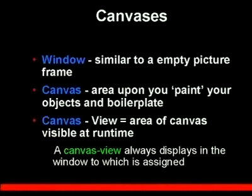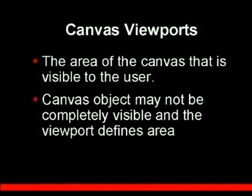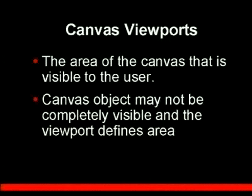Canvas views are always displayed in the window that they're assigned to. Where you have a larger canvas and you're only displaying a piece of it at a time, that's called a canvas viewport. This is the area of the canvas that is visible to the user. And if it has scroll bars, then you can move over and see the rest of the canvas.